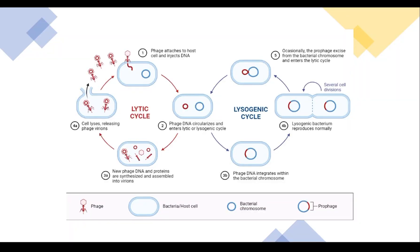Although very similar, there are some key differences between lysogenic conversion and lytic replication. The main difference is that the lytic cycle destroys the host cell, whereas lysogenic replication does not, and instead has the presence of a prophage stage. Additionally, in the lytic cycle, the DNA of the virus does not ever integrate into the host DNA. This is instead a key component of the lysogenic conversion. And third, DNA replication of the virus takes place independently from the host DNA replication in the lytic cycle, unlike the lysogenic counterpart.